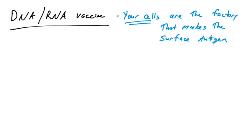DNA and RNA vaccines are very similar to subunit vaccines. The difference is that instead of making this viral protein in the laboratory and injecting it into the body, in this case you are the factory that makes the protein. This is a good middle ground between live attenuated virus vaccines and subunit vaccines, because it kind of mimics an infection — you're making this viral protein in your cells, which can provoke a stronger immune response.